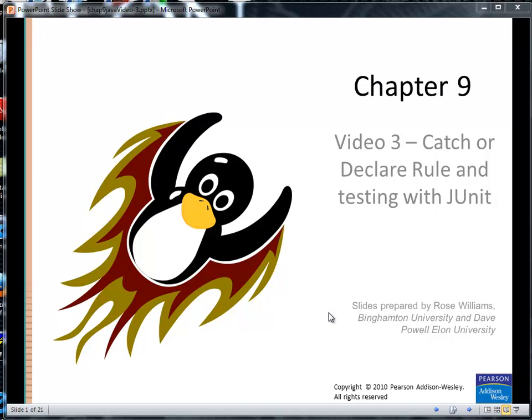In this video, we're going to talk about the real way that exceptions are typically used, where one method will declare that it throws an exception and the person that calls that method will have a try-catch block to catch that possible exception. After discussing the catch or declare rule, we'll look at how to test that an exception is thrown successfully with JUnit.